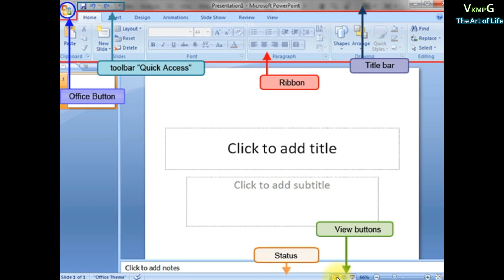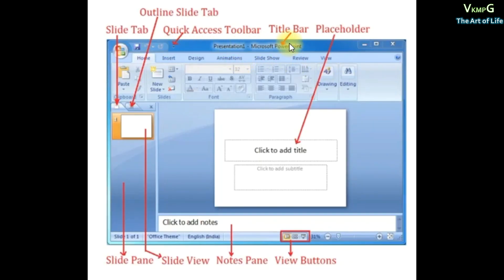There are view buttons: Normal, Slide Sorter, and Slide Show. The Normal button adds slides in normal view. The Slide Sorter button shows all slides in a single window. The Slide Show button shows all slides as a slide show. This is the Title Bar and Quick Access Toolbar, and this is the Slide Tab.